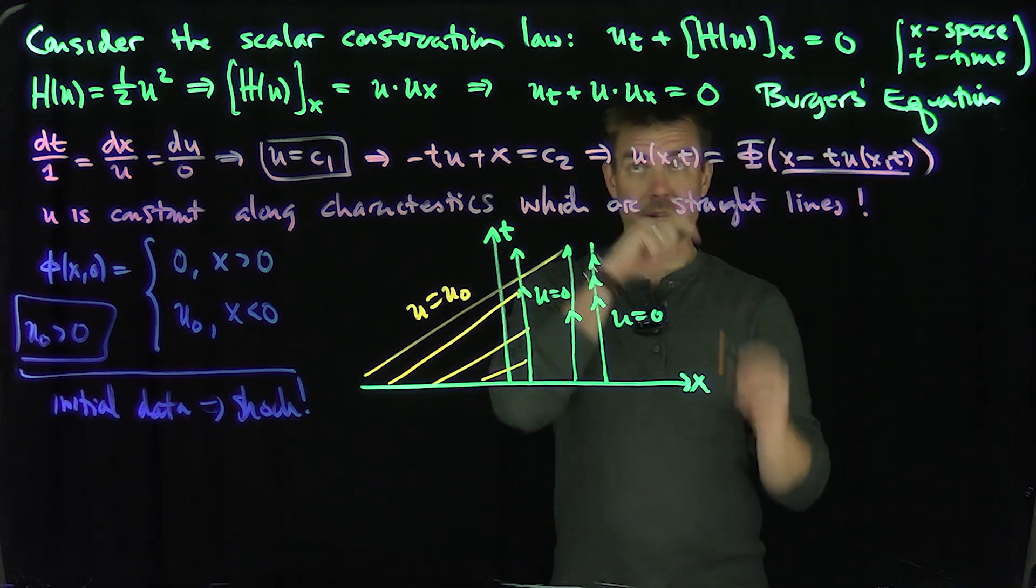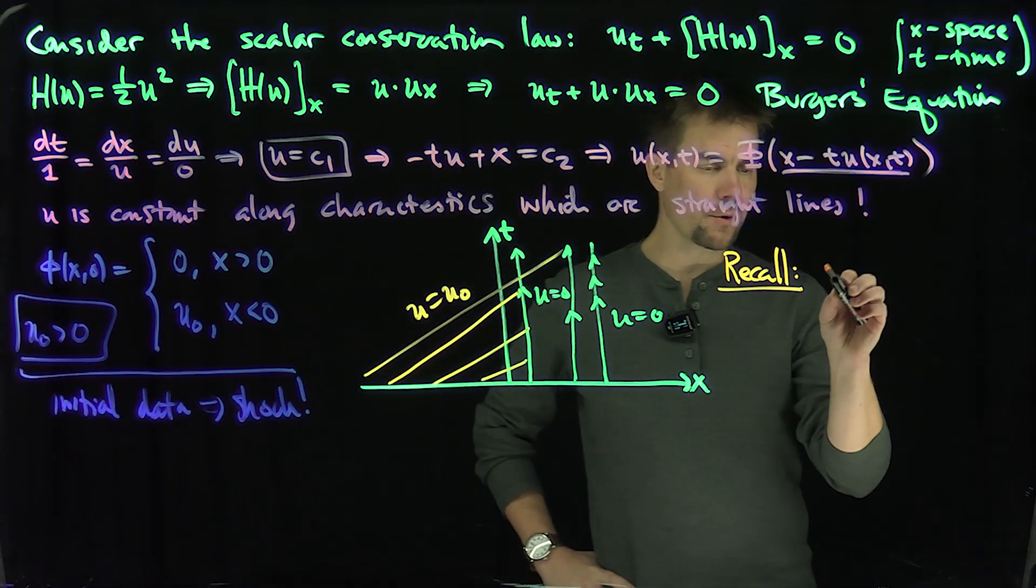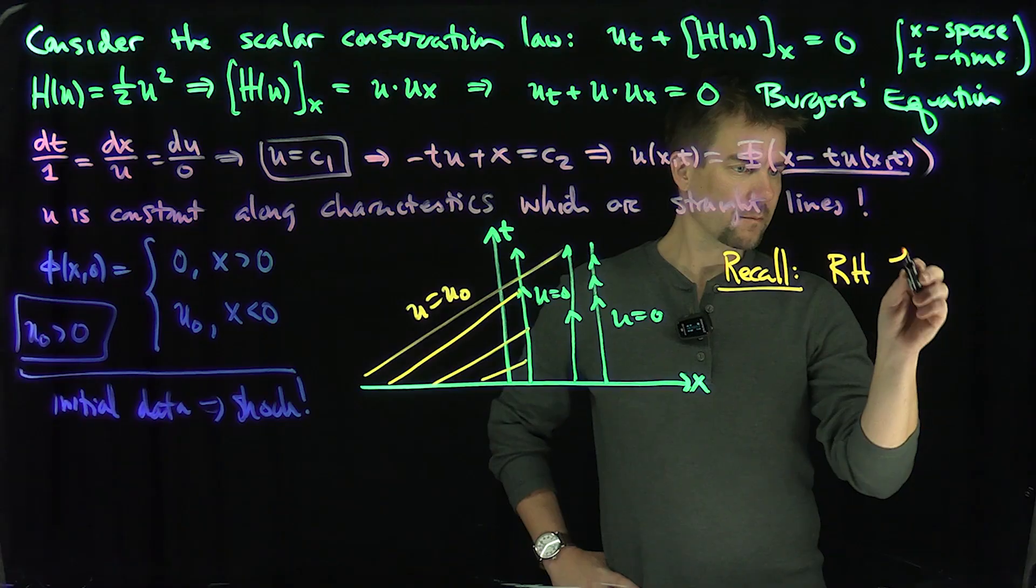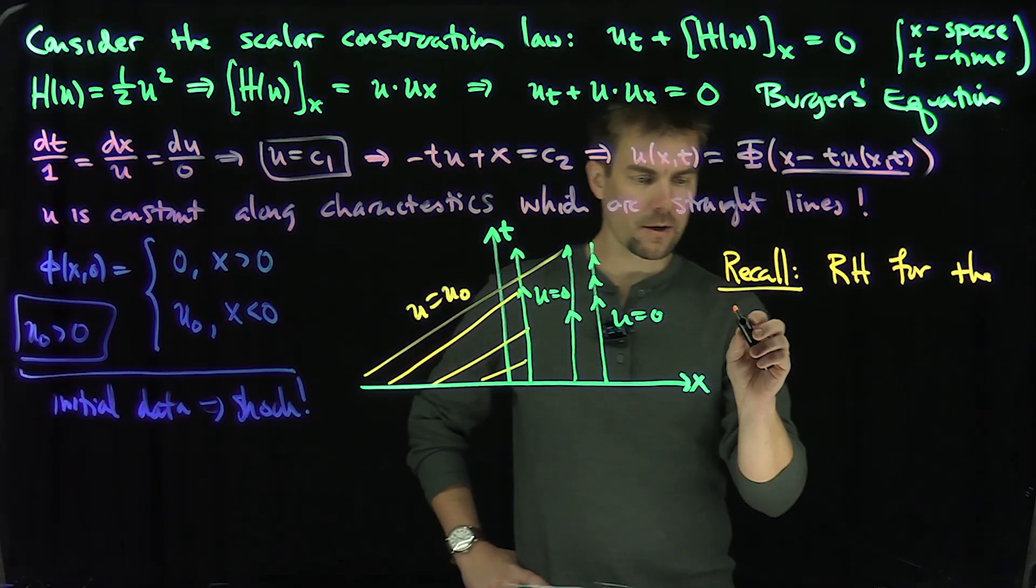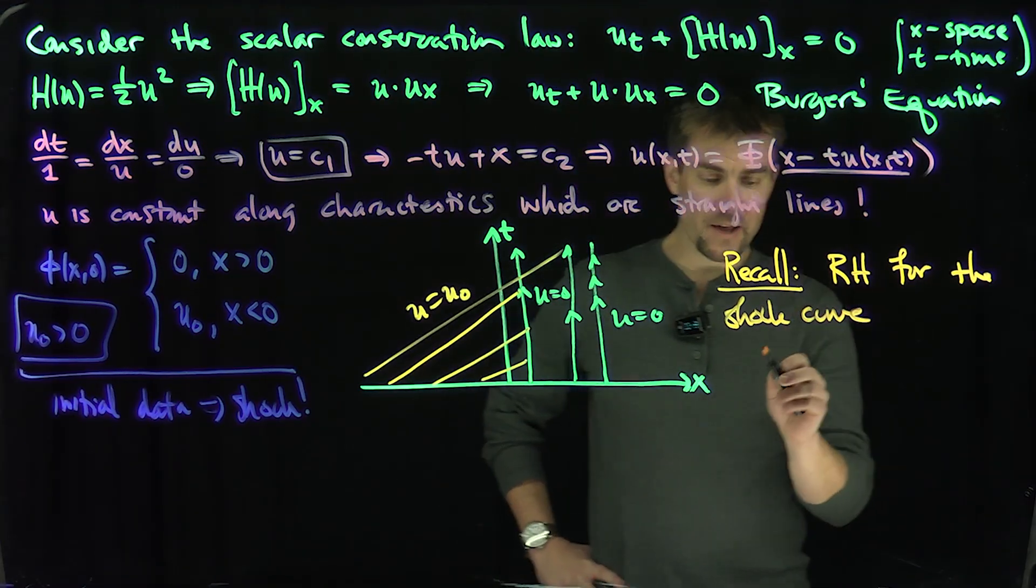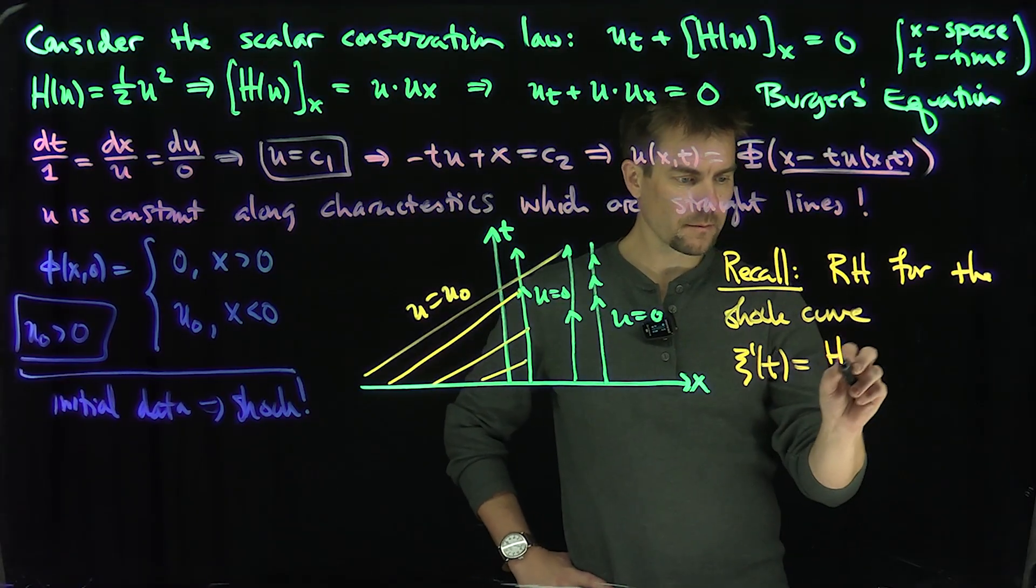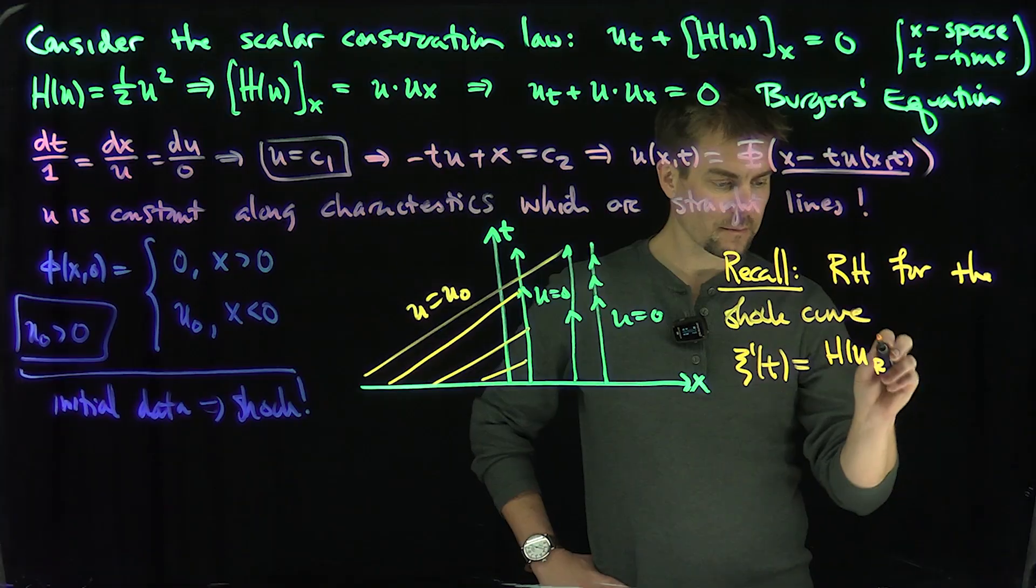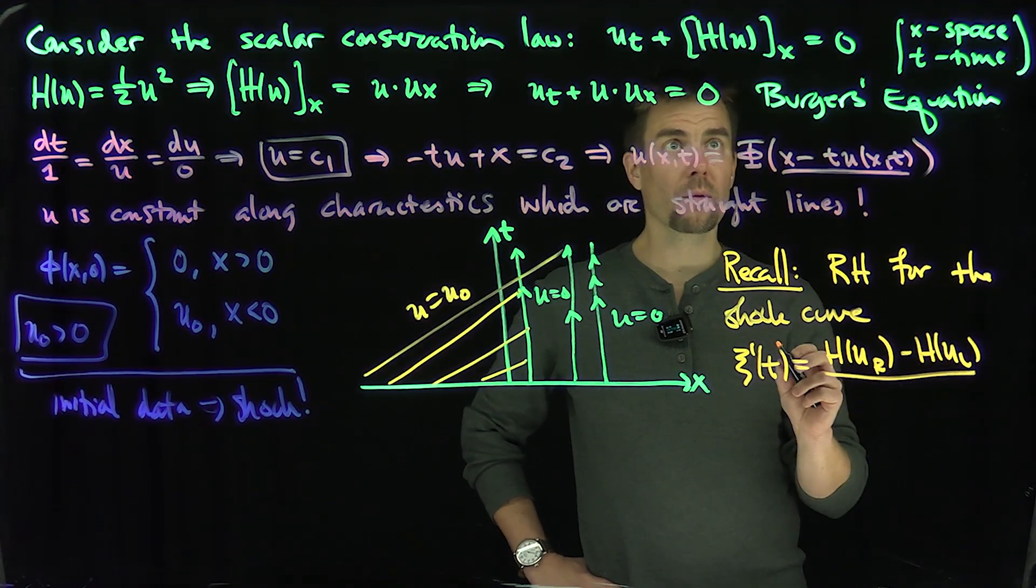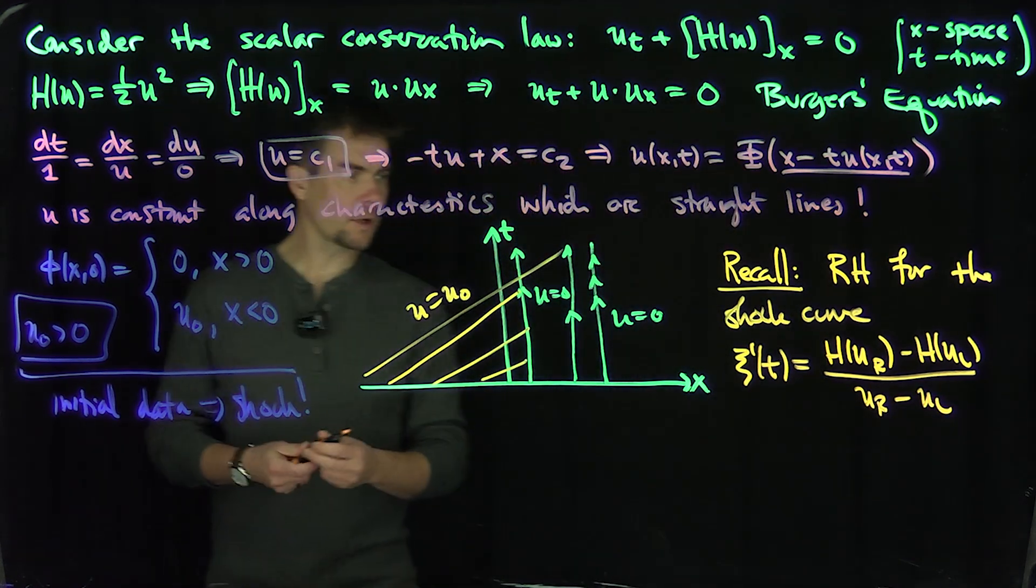So what's happening in this configuration, we can see from drawing the characteristics, there's a shock dynamic. So now we have to revert to these ideas from the scalar conservation law. Let's recall, we have this Rankine-Hugoniot condition for x_c prime, the shock curve. And what's that condition? That condition is that x_c prime of t, the shock curve, has to be h(u_r) minus h(u_l) over u_r minus u_l.